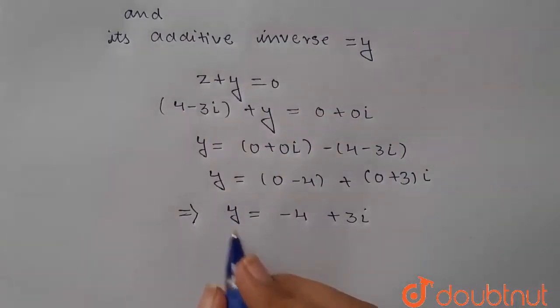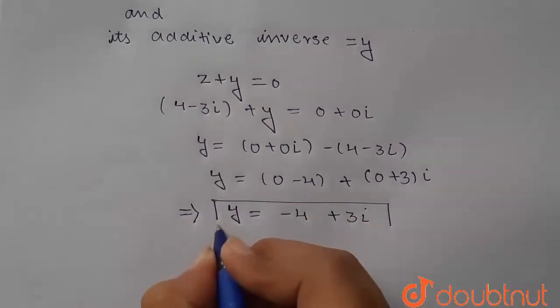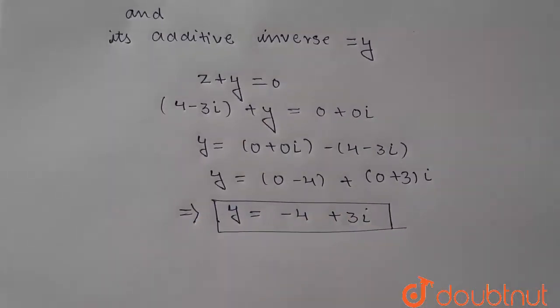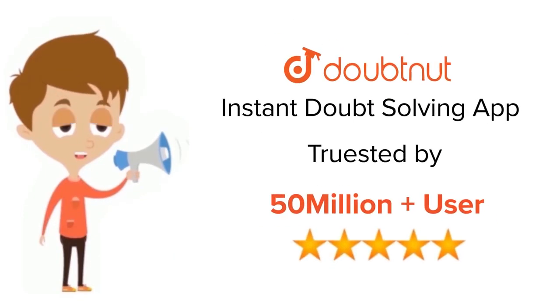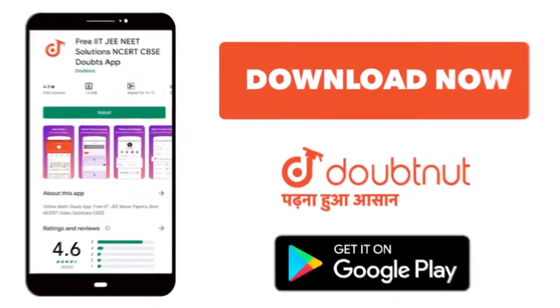So this is the required answer. This is the additive inverse of given 4 minus 3i. Thank you. For class 6 to 12, IIT-JEE and NEET level, trusted by more than 5 crore students, download Doubtnet app today.